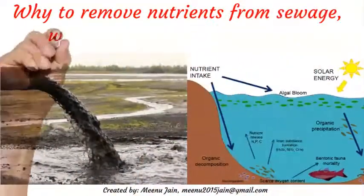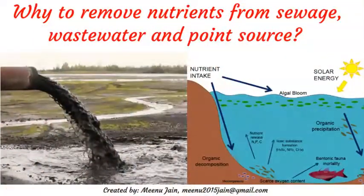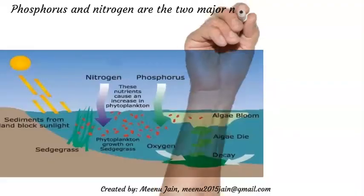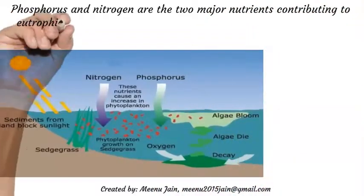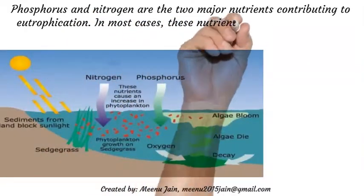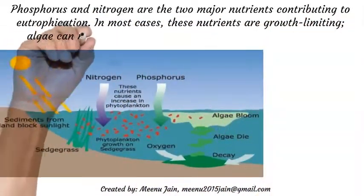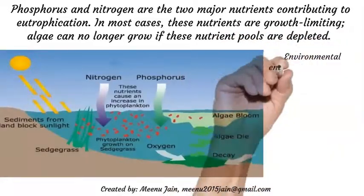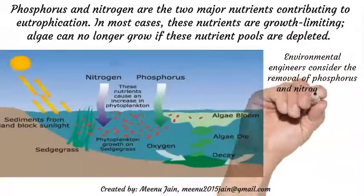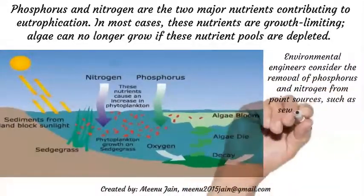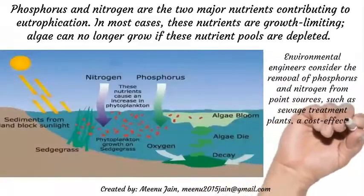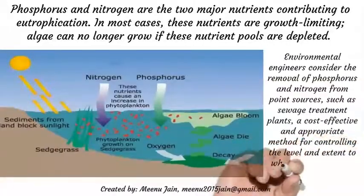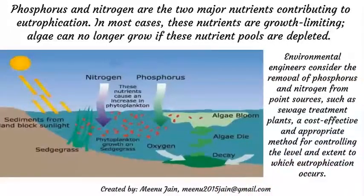Why remove nutrients from sewage, wastewater, and point sources? Phosphorus and nitrogen are the two major nutrients contributing to eutrophication. In most cases, these nutrients are growth-limiting. Algae can no longer grow if these nutrient pools are depleted. Environmental engineers consider the removal of phosphorus and nitrogen from point sources, such as sewage treatment plants, a cost-effective and appropriate method for controlling the level and extent to which eutrophication occurs.